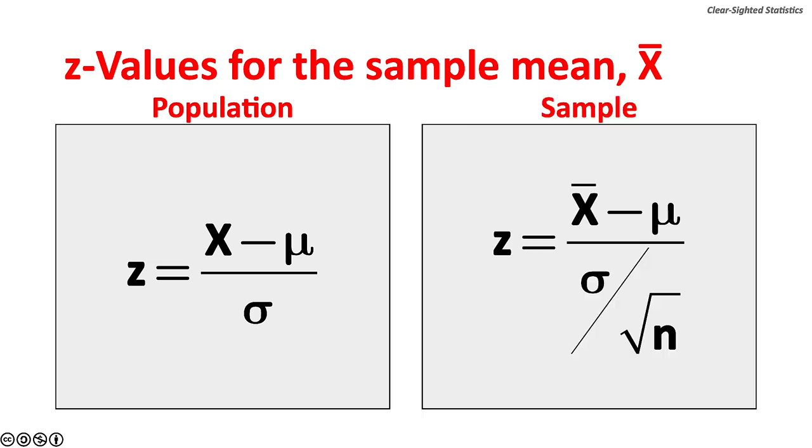For a sample, z is the sample mean x bar minus the population mean mu, this is sampling error, over the standard error of the mean